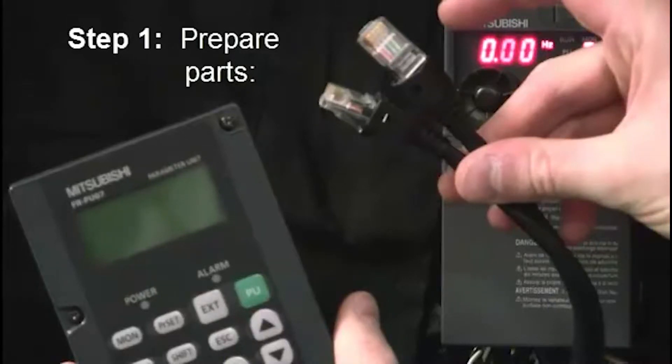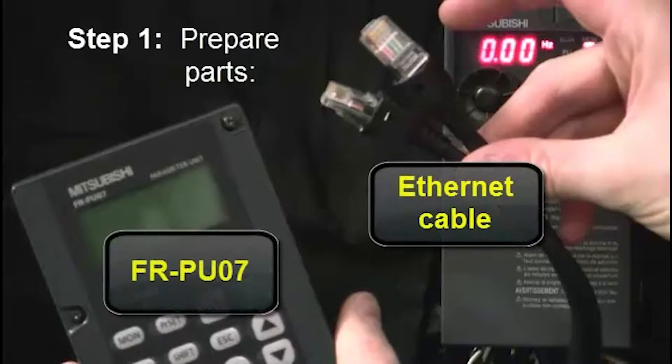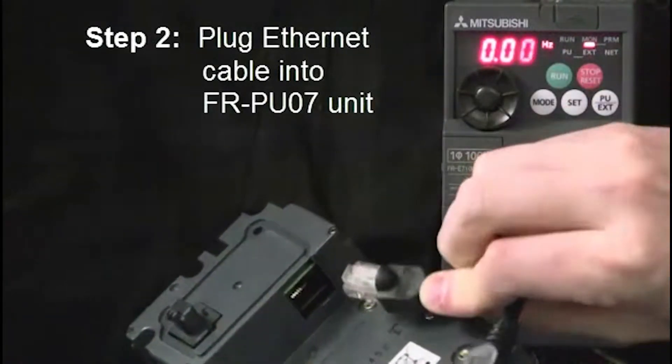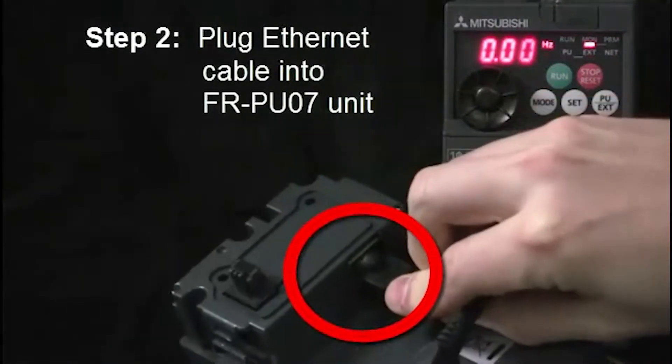The first step is to prepare the necessary parts. You'll need a PU07 and an Ethernet cable. The next step is to plug one end of the Ethernet cable into the PU07 unit on the back side.